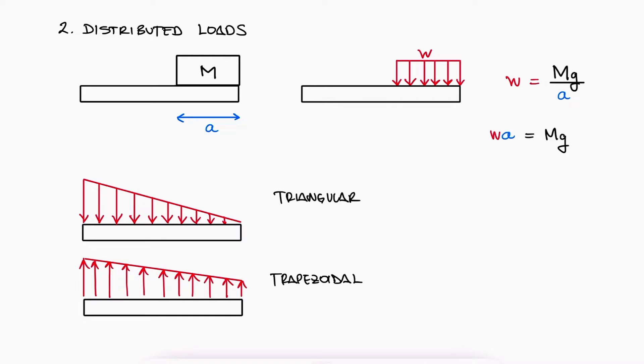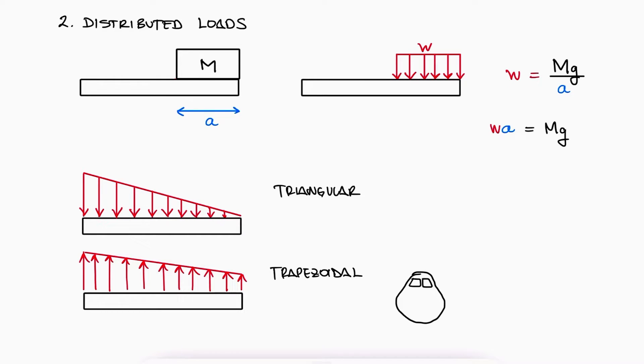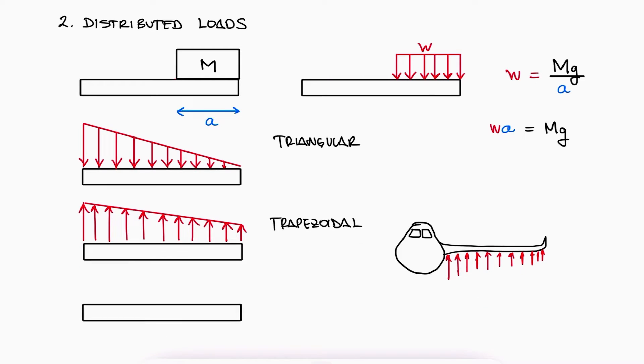Then there's the triangular or trapezoidal distributed loads. For example, the wing of an airplane will be subjected to a lift force that decreases as we move away from the fuselage. In reality, the lift force on the wing of a plane might not be linear, but a reasonable simplification can be a triangular or trapezoidal distributed load. However, if more accuracy is required, a distributed load can be written as any mathematical function of x, W(x). And finally, we have the external couples.